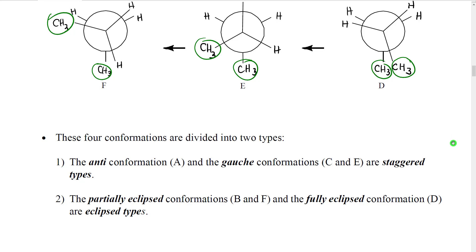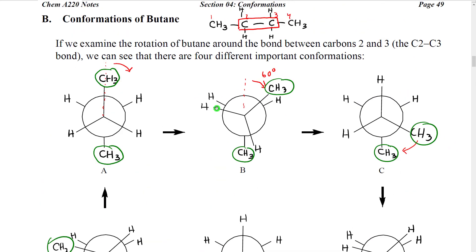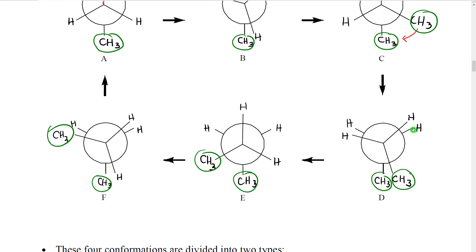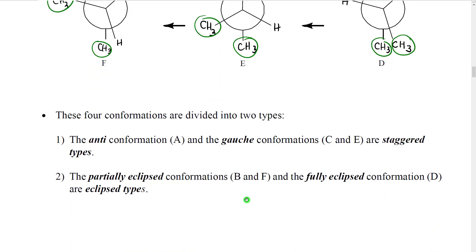We also have two types of eclipsed conformations. We have the partially eclipsed, where the large methyl group on one atom is eclipsing a small group like a hydrogen on the other atom — those are conformations B and F. In contrast, the one where the two large groups are eclipsing each other is called the fully eclipsed — that's conformation D.